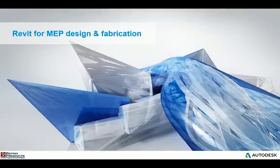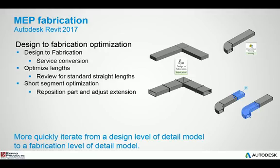That's it for the structural enhancements. Let's take a look at the MEP enhancements. In Revit 2016 they introduced fabrication capability, and in 2017 it has been enhanced and made more functional. You now have the ability to select an entire run or series of ductwork, or the system itself, and use a new command called Design to Fabrication, which automatically changes all standard Revit ductwork to fabrication part level objects.